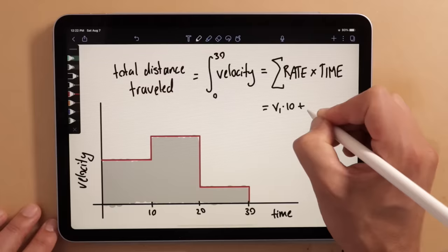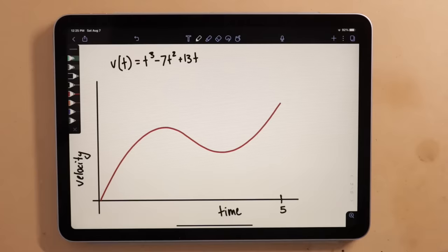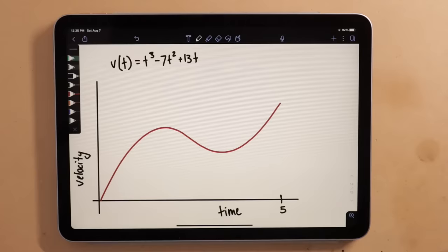Now, say our velocity function looked like this. In our first two examples, we solved by multiplying rate times time. But now the rate is different at every single point in time. So how do we calculate this area?